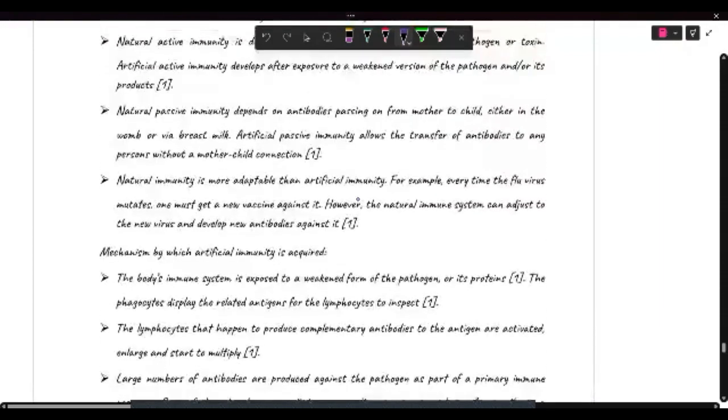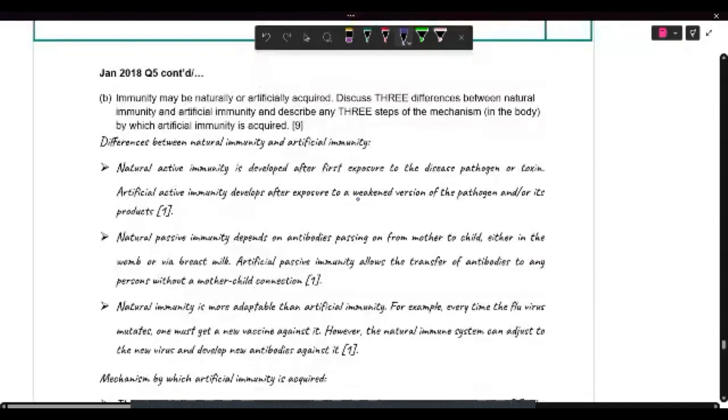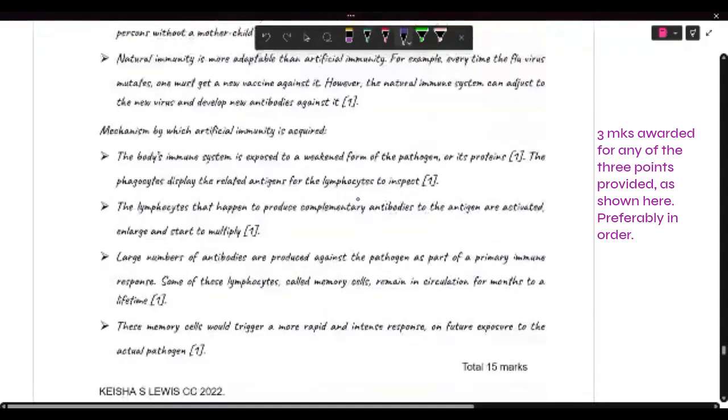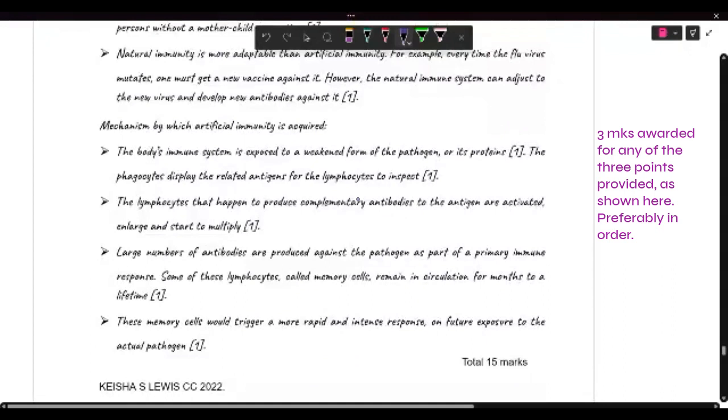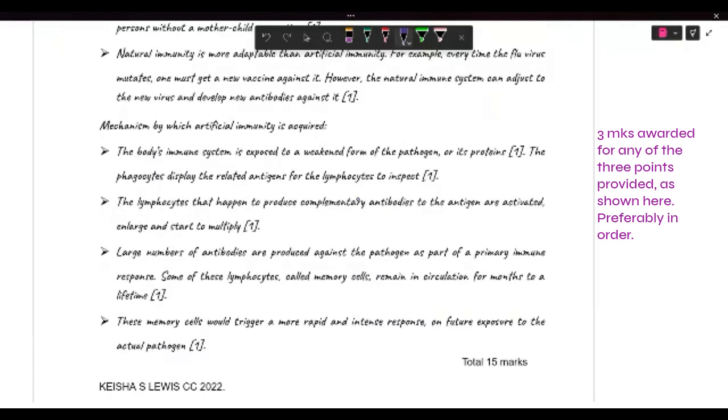And you can, as I said, you can describe any three steps. So first you expose the weakened form of the pathogen or its proteins. The phagocytes will display those antigens from those pathogens to the lymphocytes. The lymphocytes will produce complementary antibodies to the antigen, start to multiply. They produce large numbers of antibodies against the pathogen as a primary immune response.